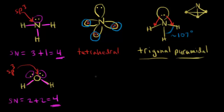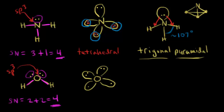We draw oxygen with its four sp3 hybrid orbitals. In terms of electrons, one orbital gets one electron, another gets one electron, and the remaining two orbitals get two electrons each — taking care of oxygen's six valence electrons. We then put in the hydrogens, each with one electron in an unhybridized s orbital, giving us two sigma bonds for water.